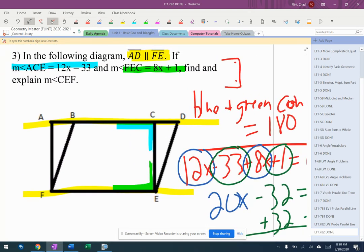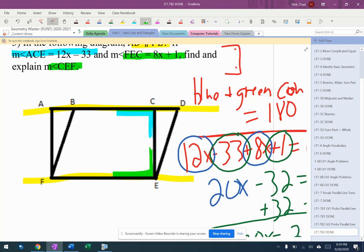And then it wants to know angle CEF. CEF is that green angle right there. The same letters just backwards.